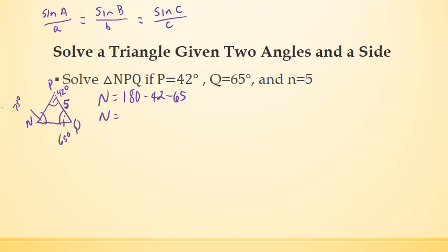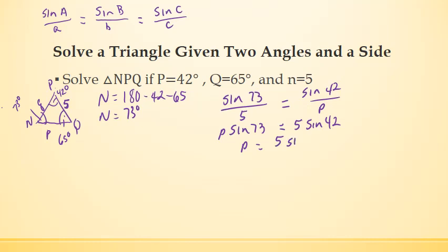Alright, now from there I want to find the side lengths of P and Q, so this is where I'm going to use the law of sines. Since I know the side length of n, I'm going to say that the sine of N which is 73 over 5, side length of n, is equal to the sine of 42 over side length P that I do not know. Now I can cross multiply here. I got P times the sine of 73 equals 5 times the sine of 42.